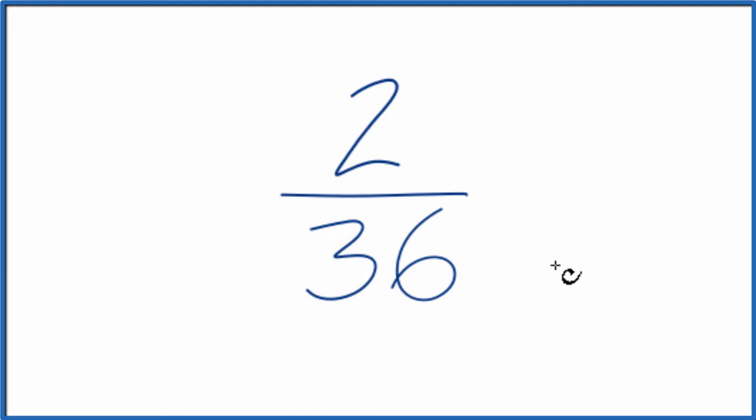To do that, we need to find a common factor, something that goes into 2 and 36. I know that 2 will go into 36 eighteen times, and 2 goes into itself once. So our common factor here is going to be 2.